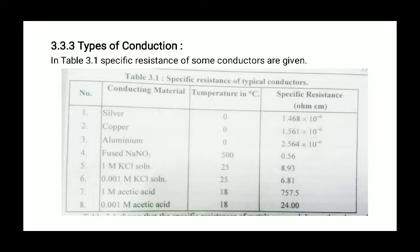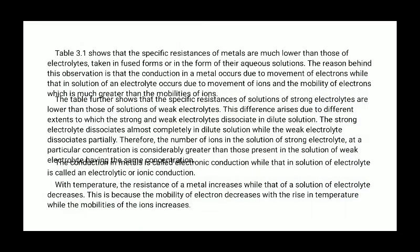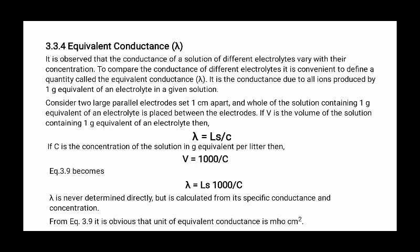This difference arises due to different extent to which the strong and weak electrolytes dissociate in dilute solution. The strong electrolyte dissociate almost completely in dilute solution while weak electrolytes dissociate partially. Therefore, the number of ions in the solution of strong electrolyte at a particular concentration is considerably greater than those present in the solution of weak electrolyte having the same concentration. The conductance in metal is called electronic conductance while that in solution of electrolyte is called as electrolytic conductance or ionic conductance. With temperature, the resistance of a metal increases while that of solution of electrolyte decreases. This is because mobility of electrons decreases with rise in temperature while the mobility of ions increases.